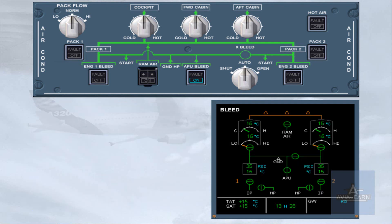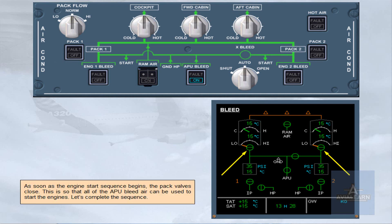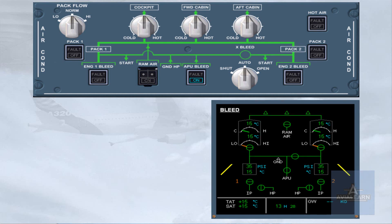As soon as the engine start sequence begins, the pack valves close. This is so that all of the APU bleed air can be used to start the engines. When the engine starting sequence is completed, the pack valves open and the APU bleed supplies the packs.